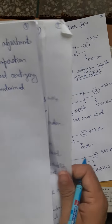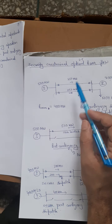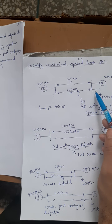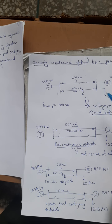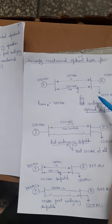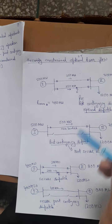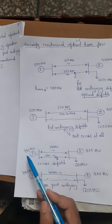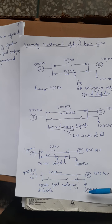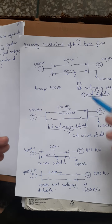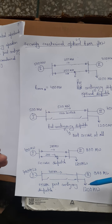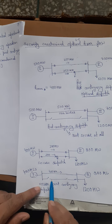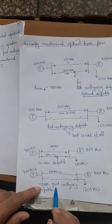In the base or healthy condition, if no adjustment is made, post-contingency constraints get violated. But if adjustments are made in the base condition, post-contingency constraints are not violated. These programs — which make such control adjustments so that constraints are not violated — are called Security Constraint Optimum Power Flow (SCOPF).